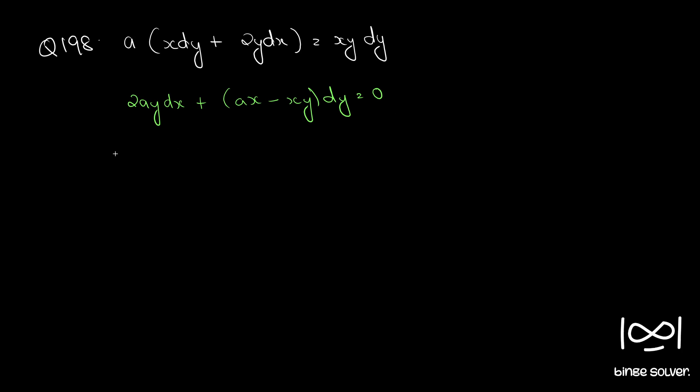Now it is in M dx plus N dy equal to 0 form and we are going to check whether this is exact by checking ∂M/∂y equal to ∂N/∂x, since ∂M/∂y equal to ∂N/∂x is the necessary and sufficient condition for such equation to be exact. So here our M is 2ay and N is ax minus xy.